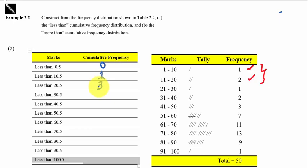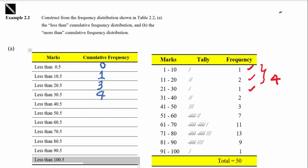Next, how many students score less than 30.5 marks? There is 1 student from 21 to 30. So the number of students scoring less than 30.5 marks is 1 plus 2 plus 1, which equals 4. Continuing the process, how many students score less than 40.5 marks? All together that is 1, 2, 3, 4, 5, 6 — so 6 students score less than 40.5 marks.